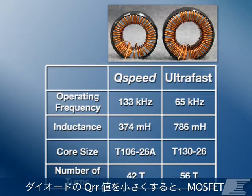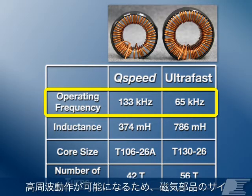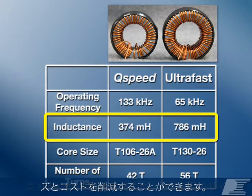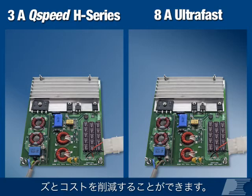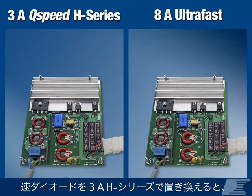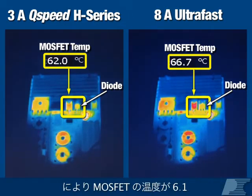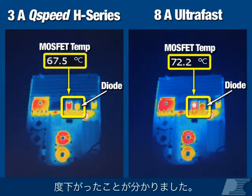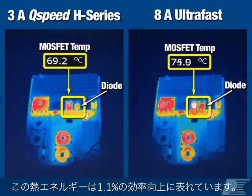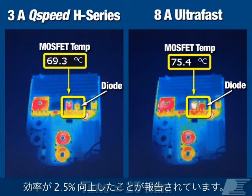Reducing diode QRR lowers MOSFET switching losses, allowing you to run designs at higher frequencies to reduce the size and cost of magnetic components. In this CCM Boost PFC, we replaced an 8-amp ultra-fast diode with a 3-amp H-Series and found that the decreased switching losses in a Q-Speed diode reduced the MOSFET temperature by 6.1 degrees. This heat energy was recovered as a 1.1% increase in efficiency. Other designers have seen up to 2.5% efficiency improvement when switching to a Q-Speed diode.